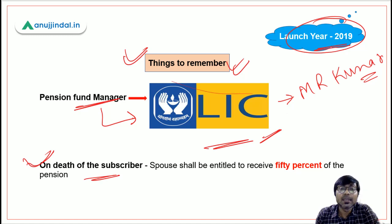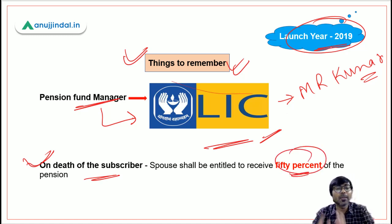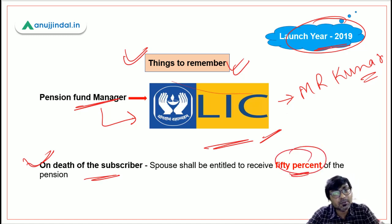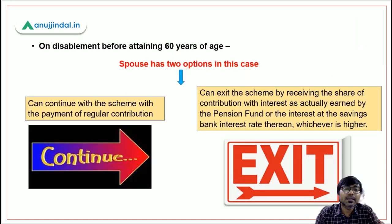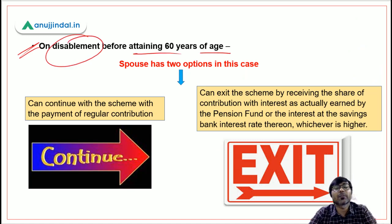One provision that is also similar to PM Laghu Vyapari Mandhan Yojana is that on the death of the subscriber, the spouse shall be entitled to receive 50 percent of the pension amount.